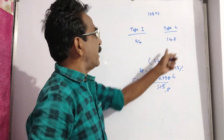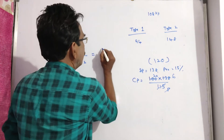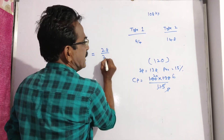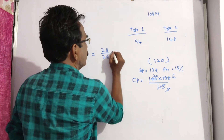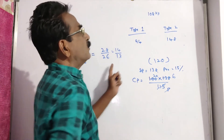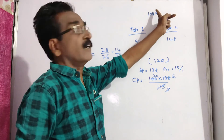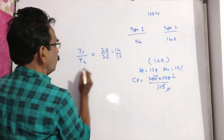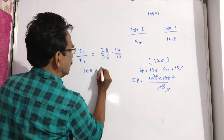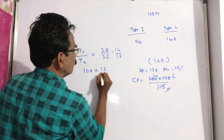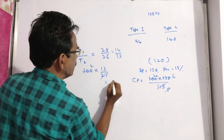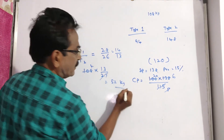Now the required ratio is: (148 − 120) to (120 − 94), which is 28 to 26, simplified to 14 to 13. We want type 2. Total amount is 108 kg, so quantity of type 2 equals 108 × 13/27 = 52 kg.